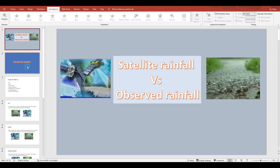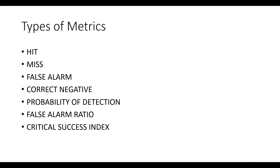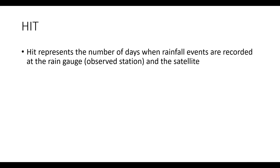Let's see what hit, miss, false alarm, and correct negative are. The remaining three are the indices which we can develop based upon these four parameter metrics. In this parameter metric analysis, it represents the number of days where rainfall is recorded on the ground — that is in the observed dataset — and the number of days in which the satellite is able to predict that a rainfall has occurred.